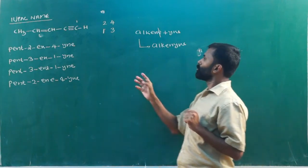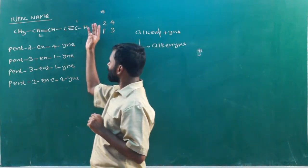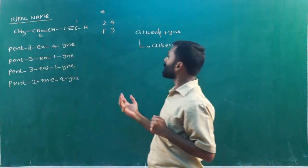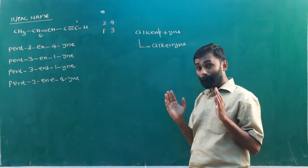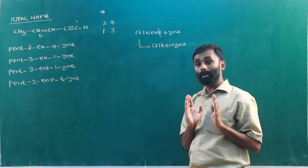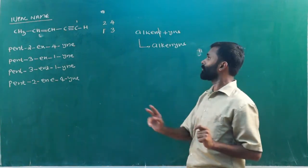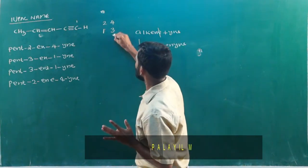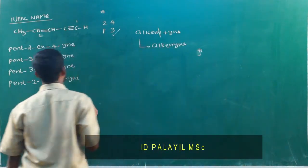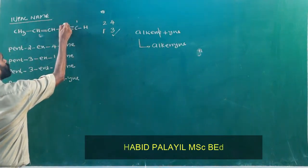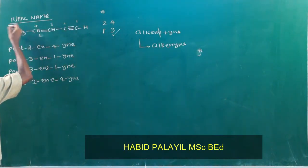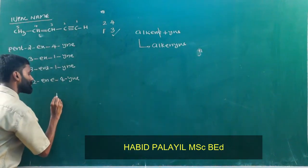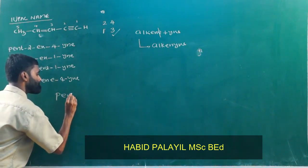Number one: numbering gives a left leg number. Number two: the right leg number equals the left leg number — lowest combination is chosen. The combinations are: two, four versus one, three. So we take one, three — this is the correct numbering: one, two, three, four, five. Total number of carbons is five, so the parent chain is pent.